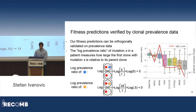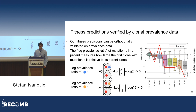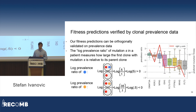We can see that CLOMU has fitness predictions nicely validated by this orthogonal data. The red line shows fitness as predicted by CLOMU using the tree phylogenies, and the box plots show the log prevalence ratio across a variety of patients. There is nice correspondence between the two. We also restrict to the set of mutations that occur frequently enough that we have relatively low noise in this log prevalence ratio.